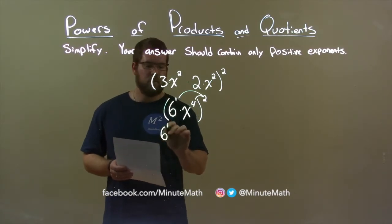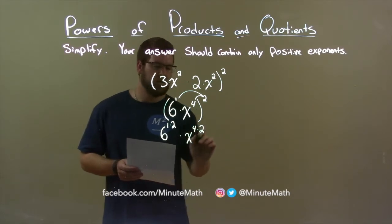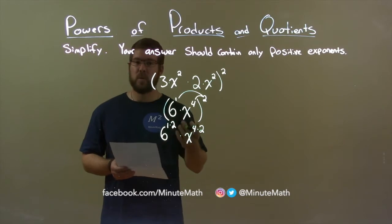So, we have 6 to the 1 times 2 power times x to the 4 times 2 power. Well, 1 times 2 is 2, and 6 squared is 36.